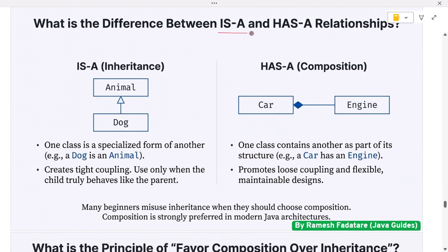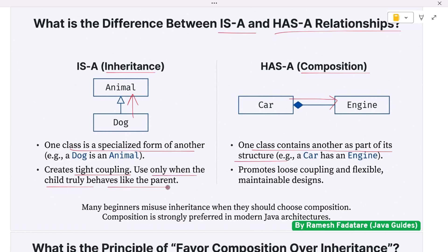What is the difference between 'is-a' and 'has-a' relationships? In object-oriented design, 'is-a' represents inheritance and 'has-a' represents composition or aggregation. For example, a Dog is an Animal — implemented using inheritance. A Car has an Engine — implemented using composition or aggregation. Interviewers use this question to test your design judgment, since many beginners misuse inheritance when they should choose composition. 'Is-a' relationships create tight coupling and should only be used when the child truly behaves like the parent. 'Has-a' relationships promote loose coupling and allow more flexible, maintainable designs. Composition is strongly preferred in modern Java architectures as it avoids fragile base classes and unintended method overrides.